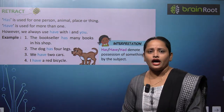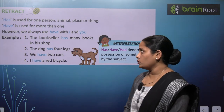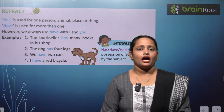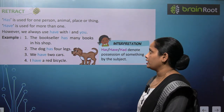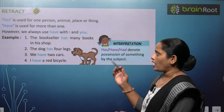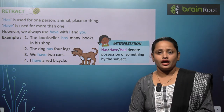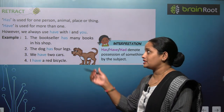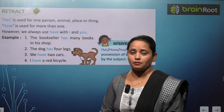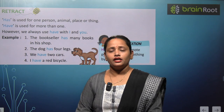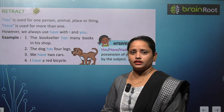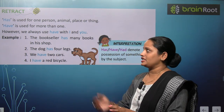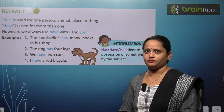Has is used for one person, animal or thing. Has joh hai, usse kab use karte hai — jab hum kisi ek person ki baat karte hai, kisi ek animal ki baat karte hai, ya phir kisi ek cheez ki baat karte hai.